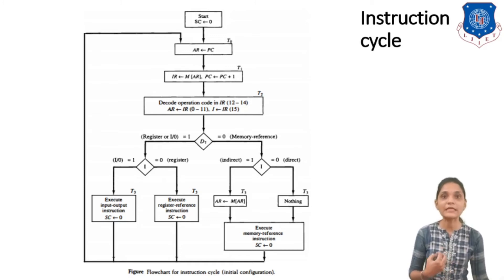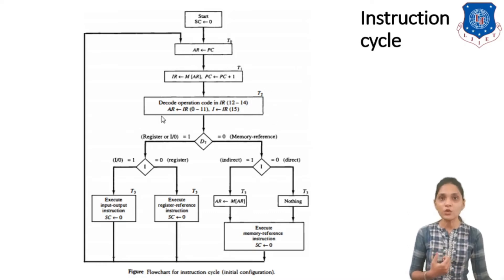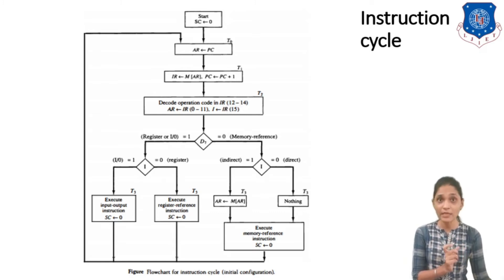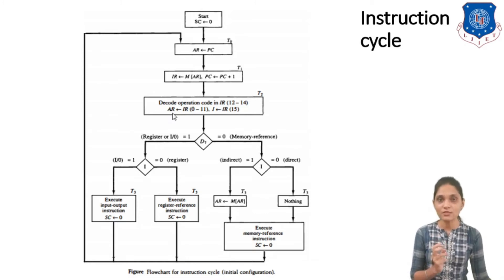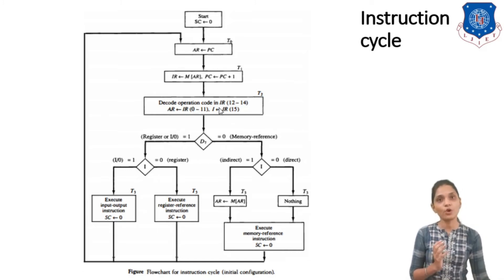After fetching at T0 and T1, we decode the instruction. This decoding task is completed at T2. For decoding, you provide the 3-bit operation code from bits 12, 13 and 14 of the IR register, which holds the full 16-bit instruction. According to that decoding, D0 to D7, one control signal is generated. Also, the address from bits 0 to 11 of the IR is stored in the address register, and the 15th bit is stored in the I flip-flop for direct or indirect addressing.